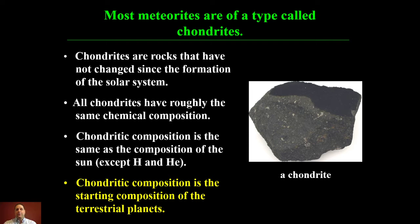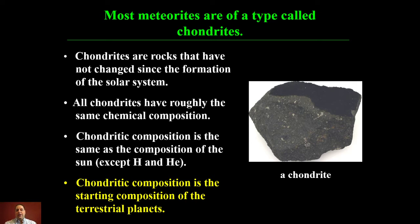If you took a chondrite, melted it, and counted up the atoms of different types, you'd see specific proportions of elements — that is the chondritic composition. If I take a sample of my computer or a piece of wood or a rock outside, I won't find that chondritic composition. But if I could somehow melt the entire Earth, stir it all up, and take a sample, I'd find a proportion of elements that matches what chondrites have.